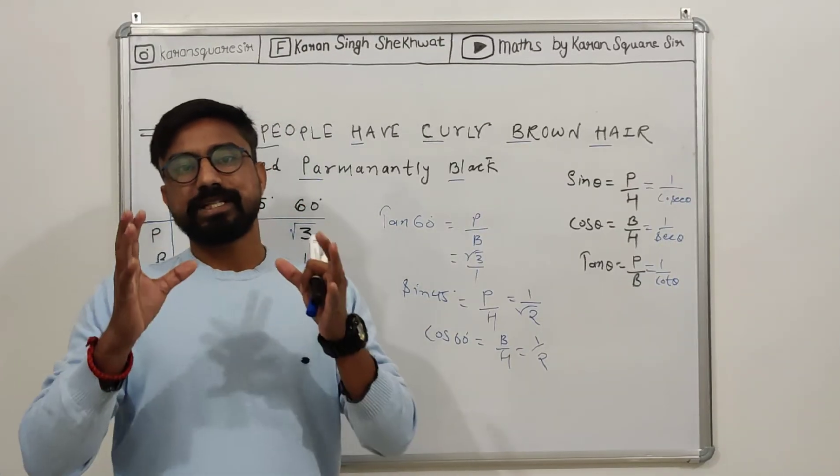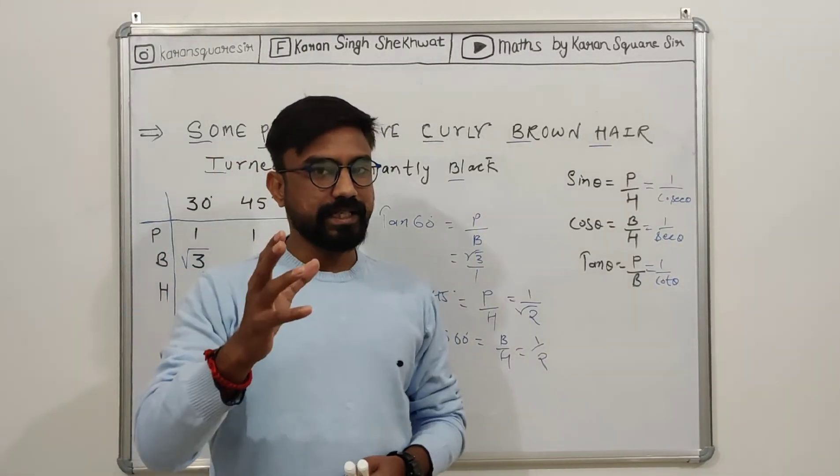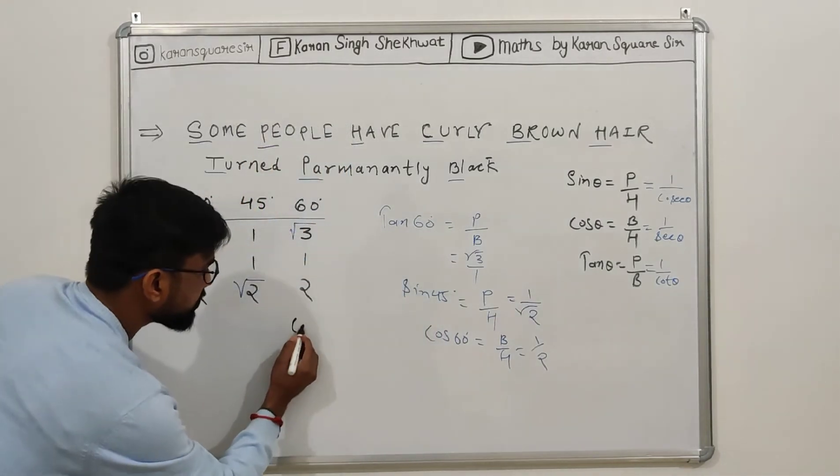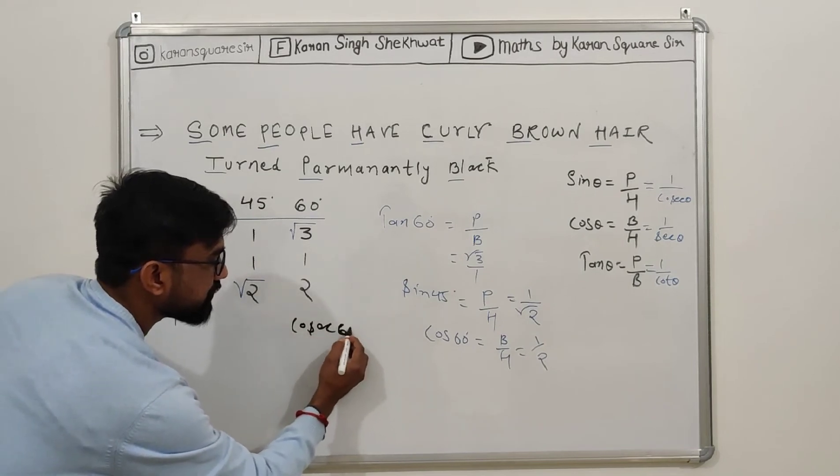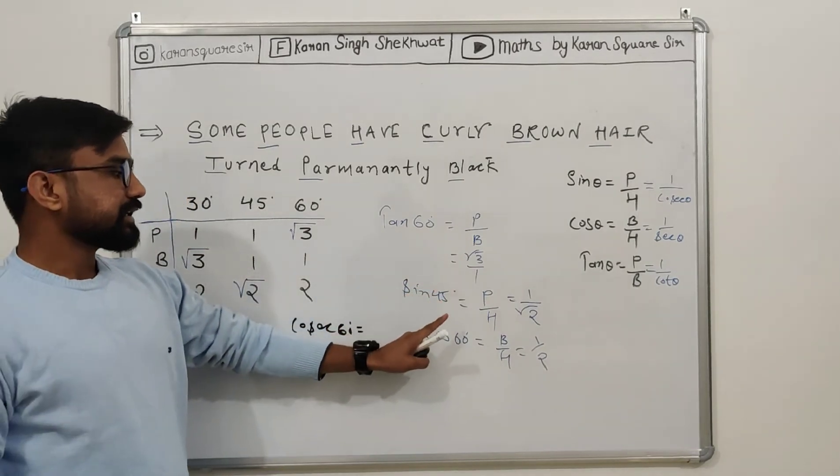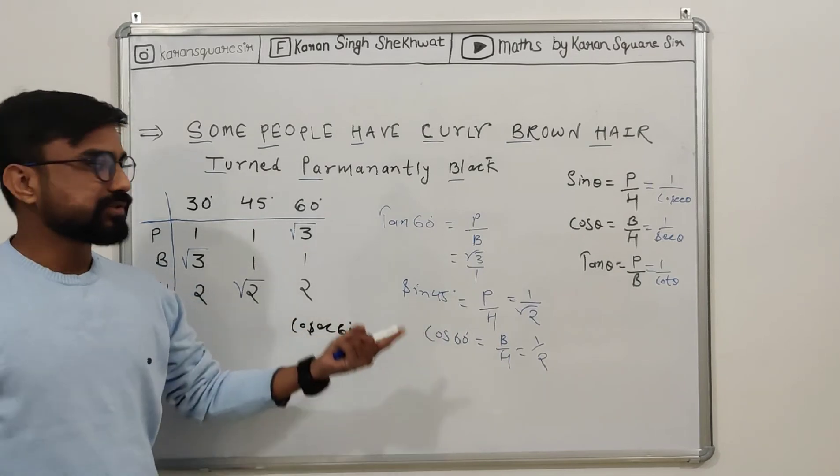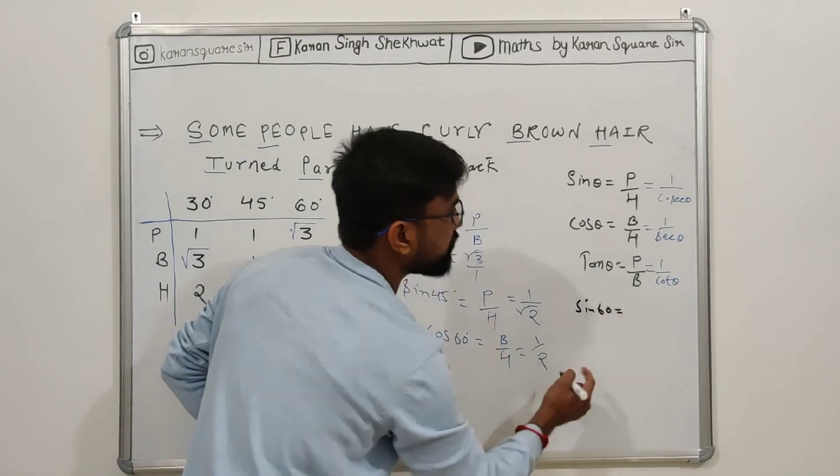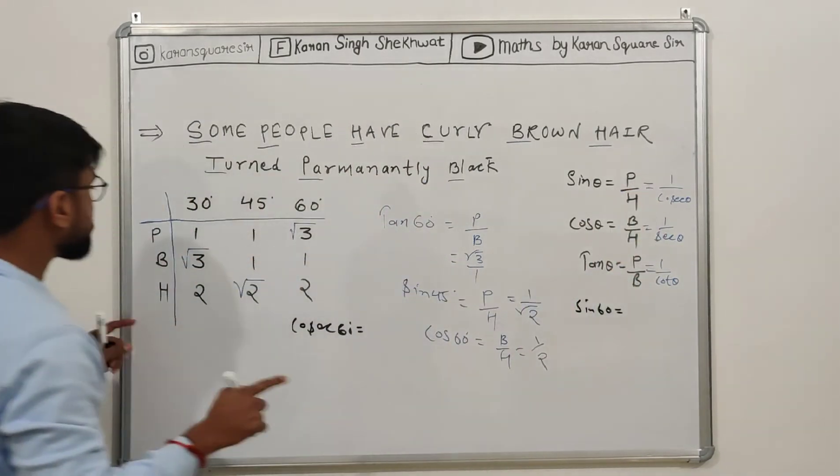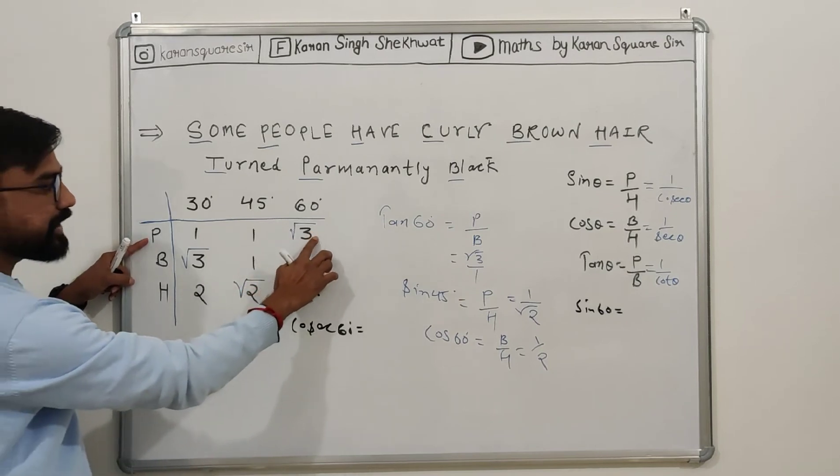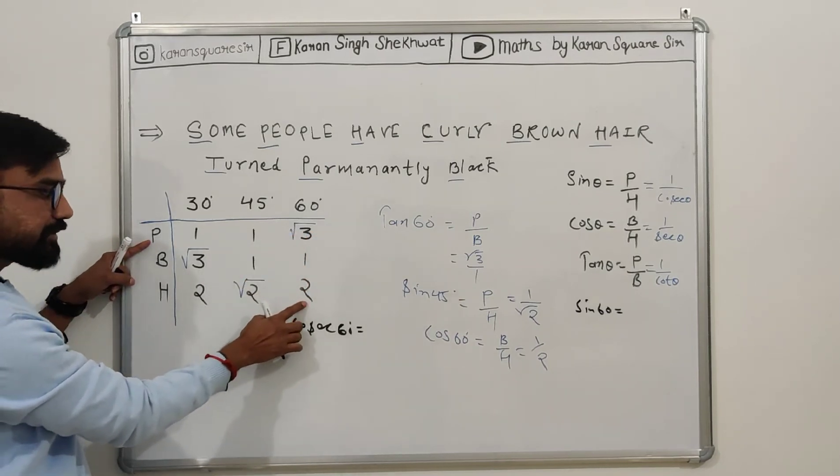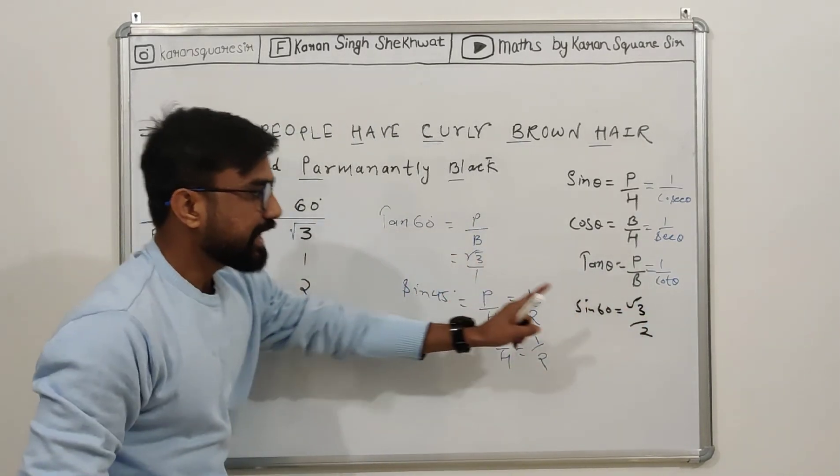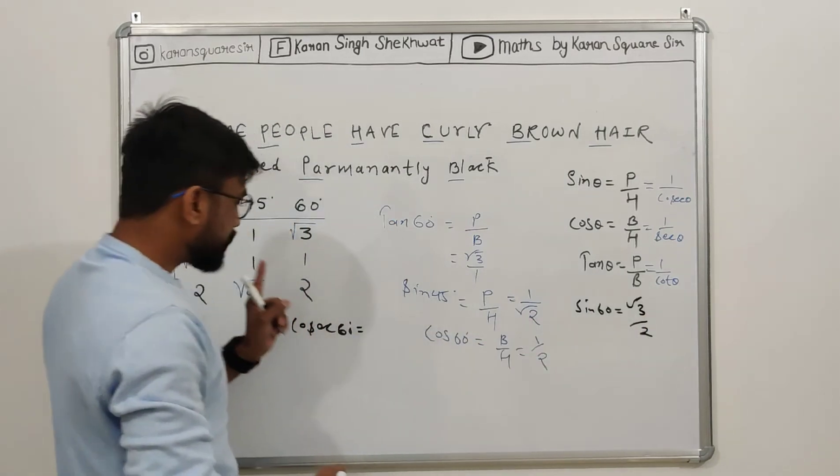So, for example, cosec 60 value find. How do you go? It's the reciprocal. So cosec 60 value is the reciprocal of sin 60. Sin 60 is perpendicular upon hypotenuse - 60 has perpendicular root 3 and hypotenuse 2, so it's root 3 upon 2. So reverse it.